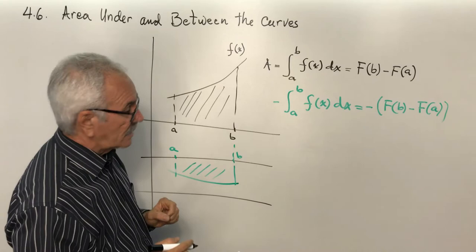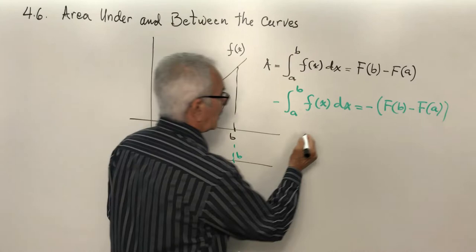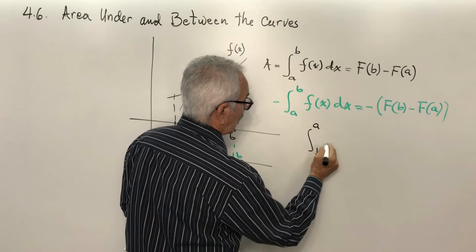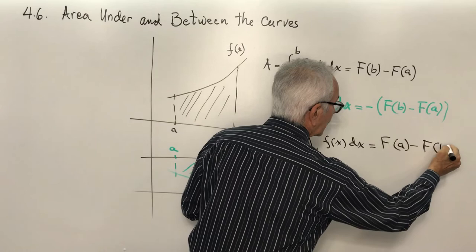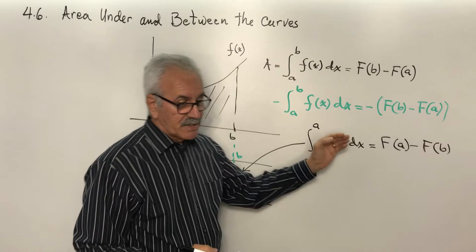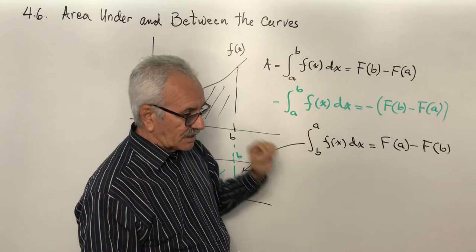In such a case, based on the property we studied before, we write the integral from A to B of f(x) dx as equal to F(A) minus F(B). Remember, when working with definite integrals we don't need the constant — we get exact results when analyzing any process.